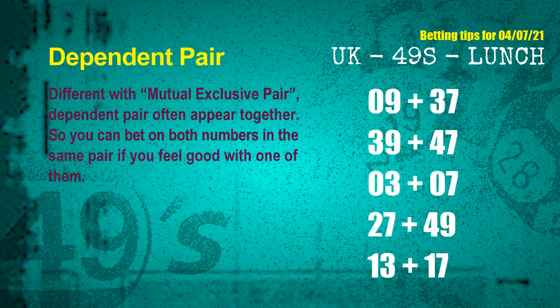Some numbers are mutual exclusive, some are dependent. Numbers in the same dependent pair you can bet on both, because they are often drawn in one draw. The dependent pairs for next draw are: first pair, 09 and 37; second pair, 39 and 47; third pair, 03 and 07; fourth pair, 27 and 49; fifth pair, 13 and 17.